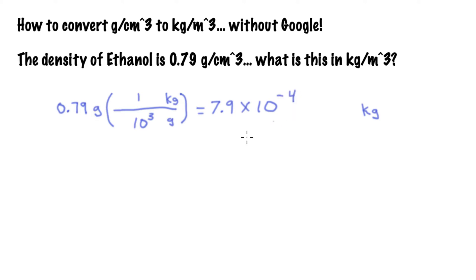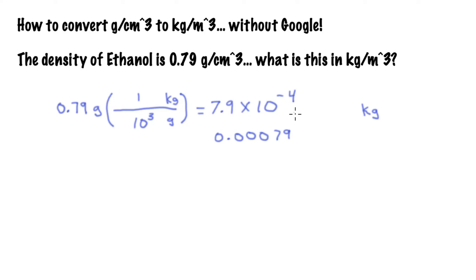Or if you did it out the long way and you want that in just regular decimal notation, you'd have to put three zeros and then the 7 and the 9. To remind you, the minus 4 means that you move the decimal place 4 to the left: 1, 2, 3, 4.